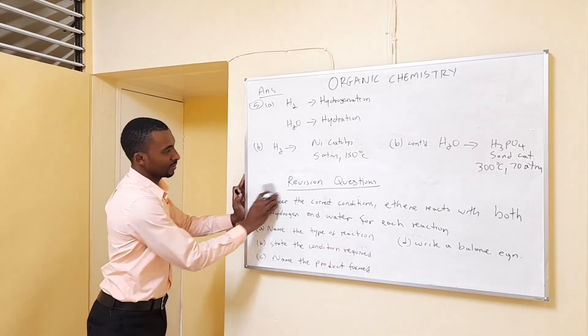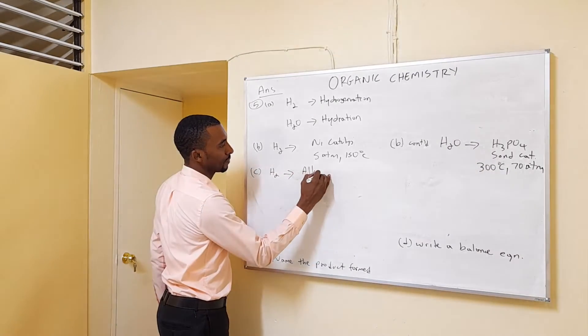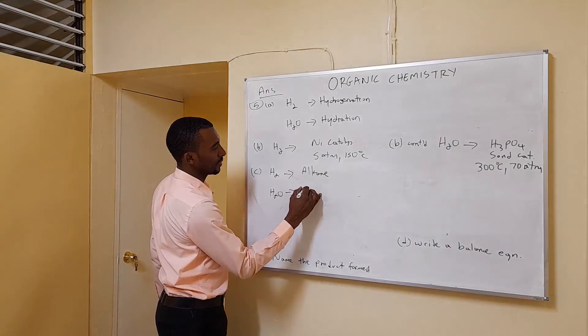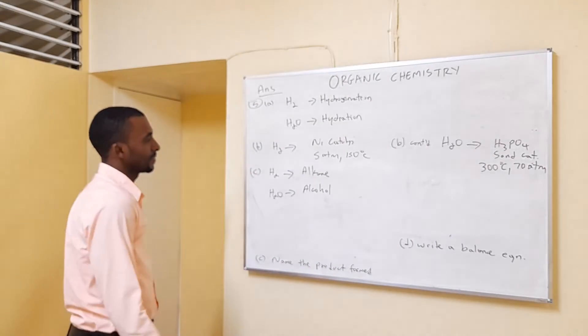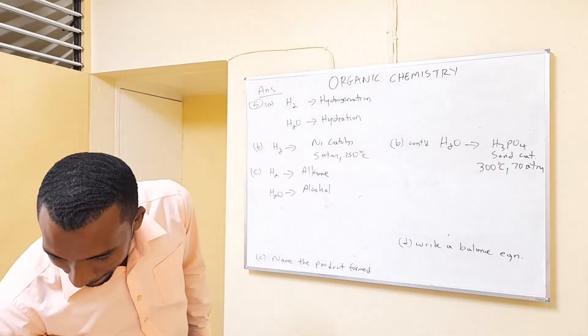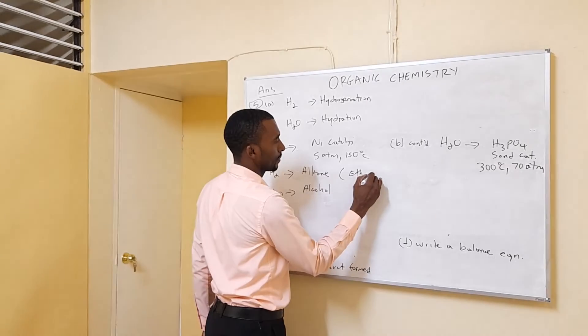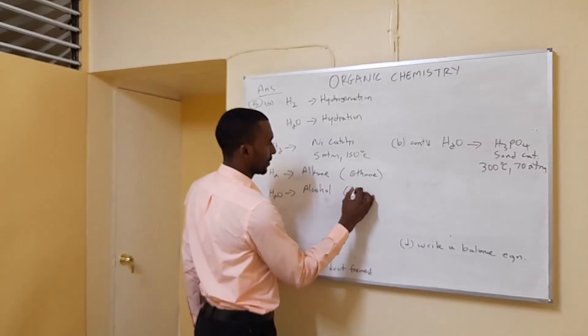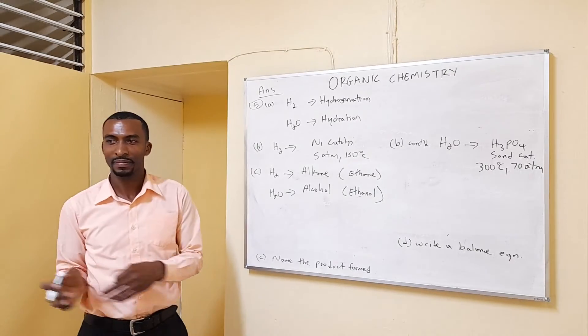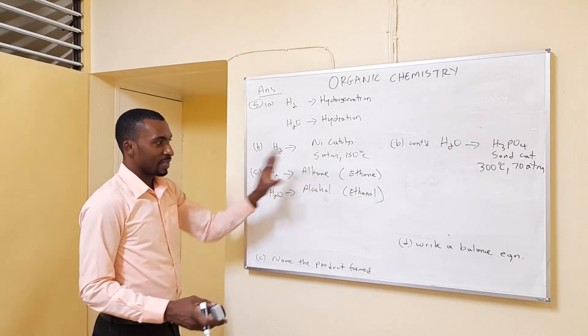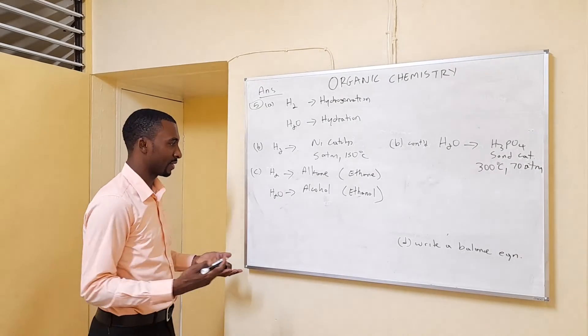Name the product formed in each. For the hydrogen, the product formed is alkane. For the hydration, it's alcohol. Since it says ethene, the specific name would be ethane and ethanol. So if they give a specific alkene, it's probably about the specific name of the product. But in general, it would be the general compound that is formed. If they didn't give you a starting reactant, then you would just want the general one.